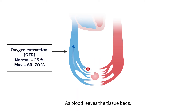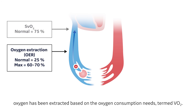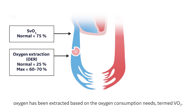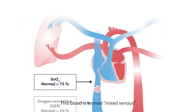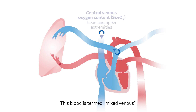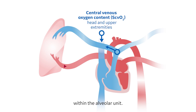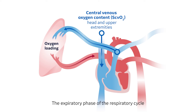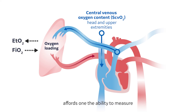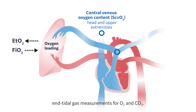As blood leaves the tissue beds, oxygen has been extracted based on the oxygen consumption needs, termed VO2. This blood is termed mixed venous and returns to the heart in order for reoxygenation to occur within the alveolar unit. The expiratory phase of the respiratory cycle affords one the ability to measure end tidal gas measurements for both O2 and CO2.